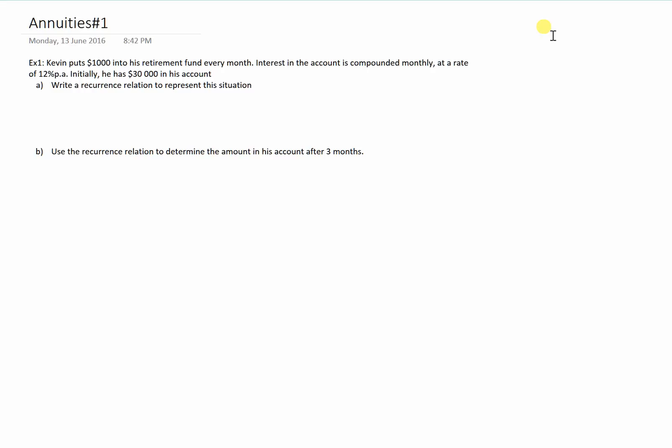Kevin puts $1,000 into his retirement fund every month. Interest in the account is compounded monthly at a rate of 12% per annum. Initially, he has $30,000 in his account. Write a recurrence relation to represent this situation.